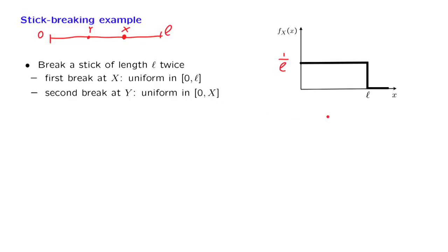What does this assumption mean? It means that if the first break was at some particular value, little x, then the random variable Y has a conditional distribution, which is uniform over the interval from 0 to X. So the conditional PDF is uniform. A conditional PDF, like any other PDF, must integrate to 1. So the height of this conditional PDF is equal to 1 over X.